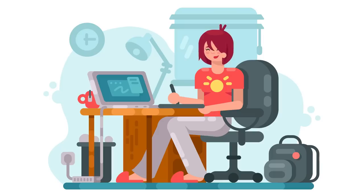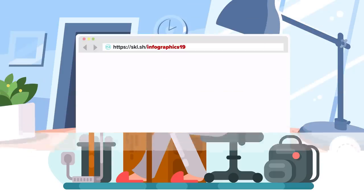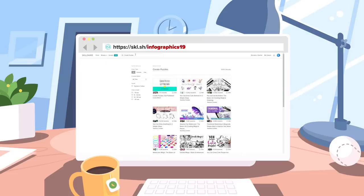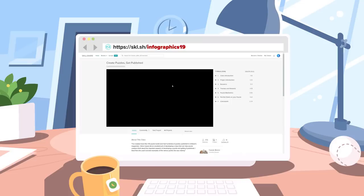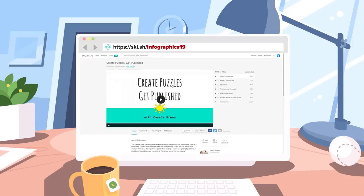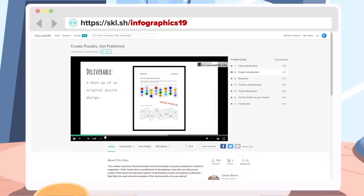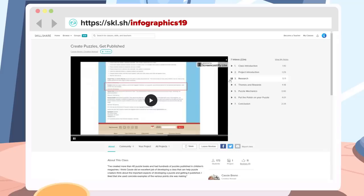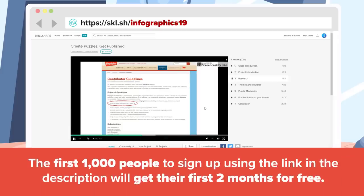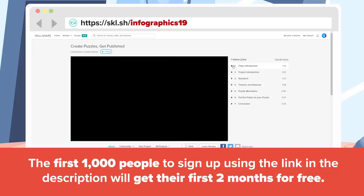Are you as much of a fan of puzzles as we are? If so, we suggest checking out a class on Skillshare called Create Puzzles, Get Published. The class talks about how to do proper research, how to choose themes and rewards, how puzzle mechanics work, and more. You can learn this and many more things by joining Skillshare. Premium Membership will give you unlimited access to topics that will improve your skills and your life. The first 1,000 people to sign up by visiting Skillshare.com slash infographics19 or clicking the link in the description will receive two months of Skillshare absolutely free. Join Skillshare and start learning today!